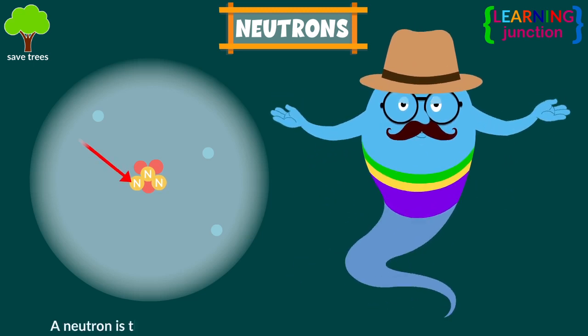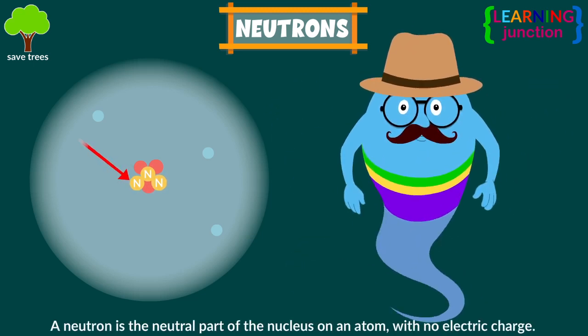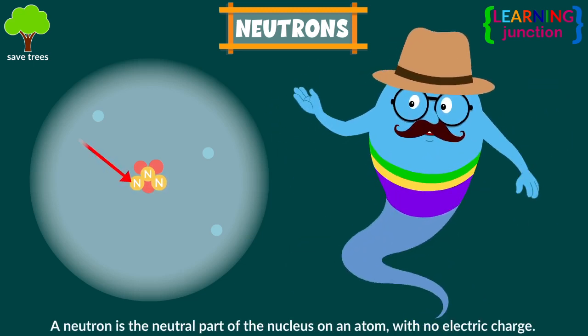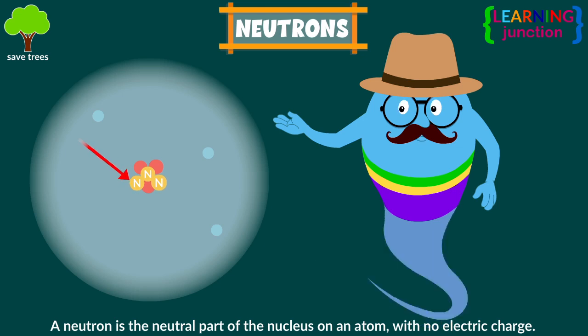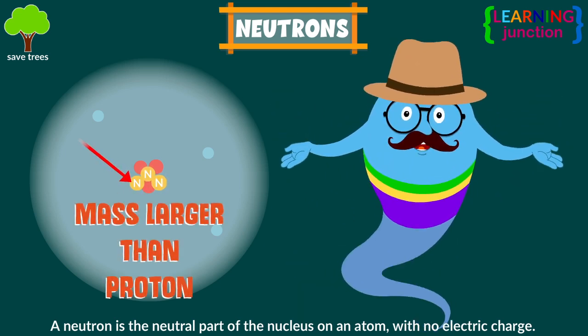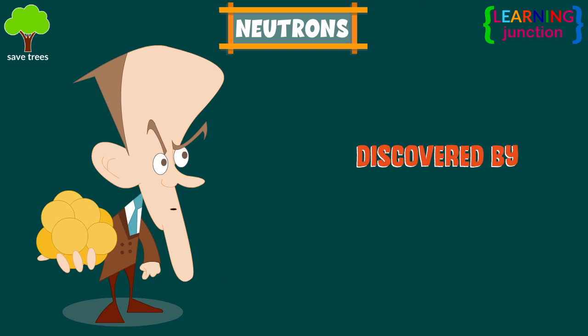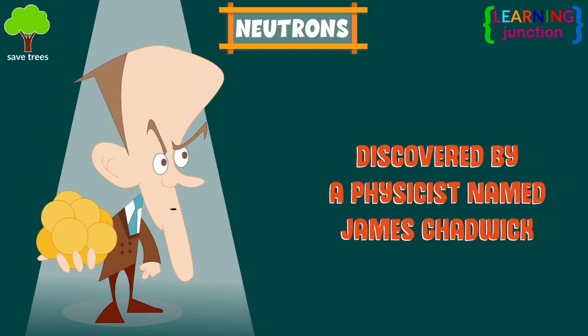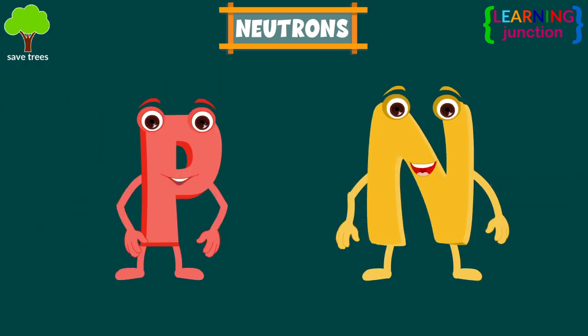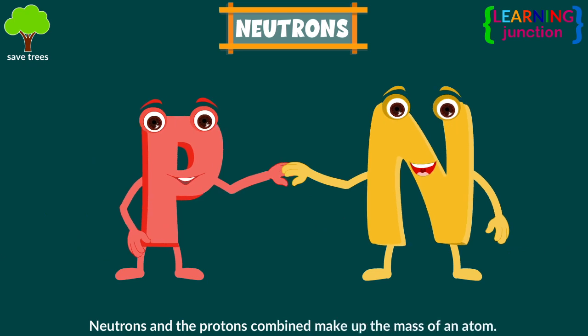A neutron is the neutral part of the nucleus of an atom, with no electric charge, and a mass slightly larger than that of a proton. It was discovered by a British physicist named James Chadwick. Protons and neutrons combined make up the mass of an atom.